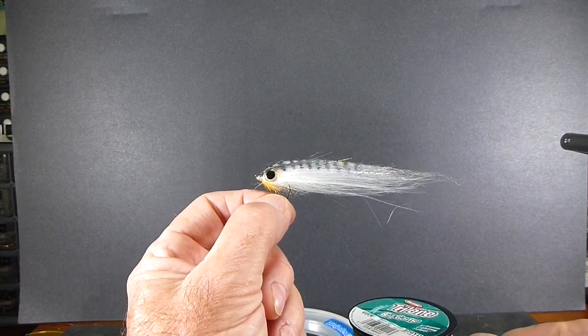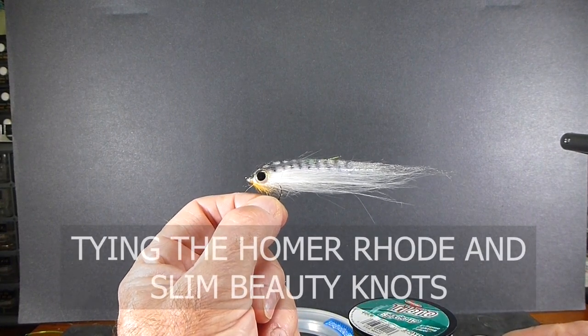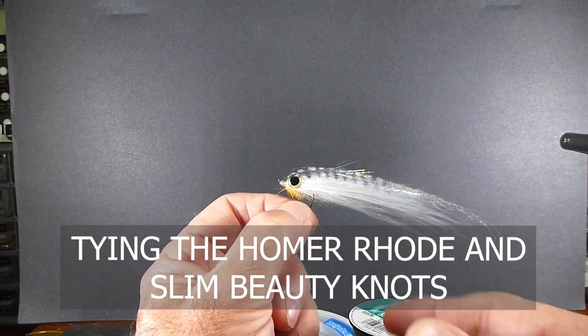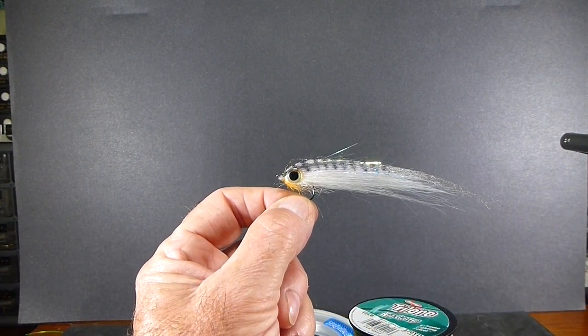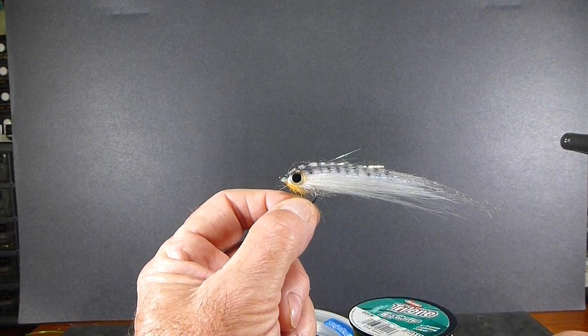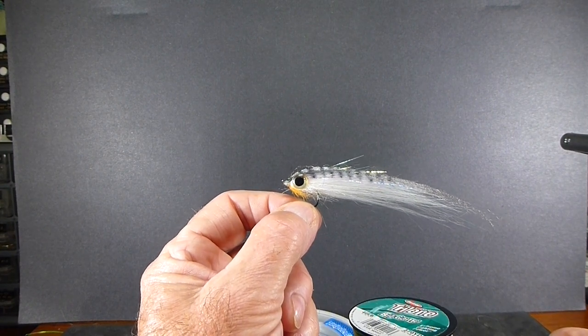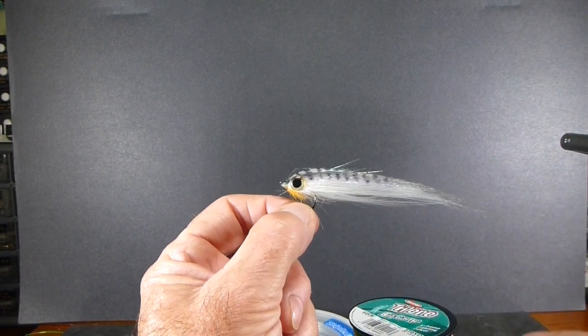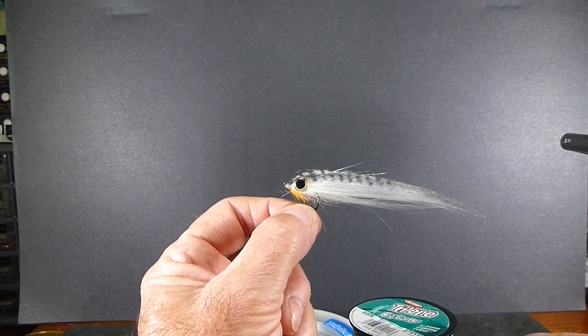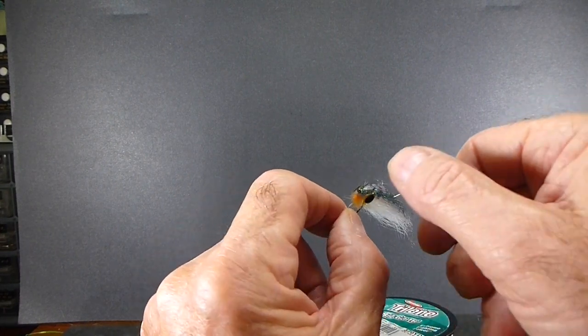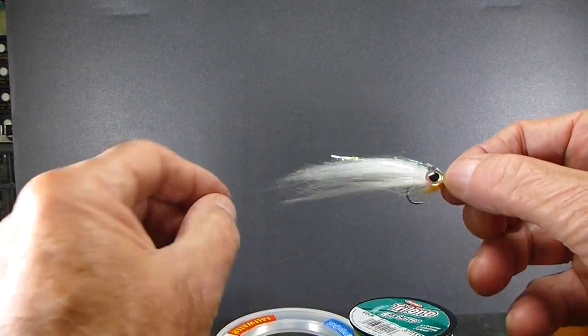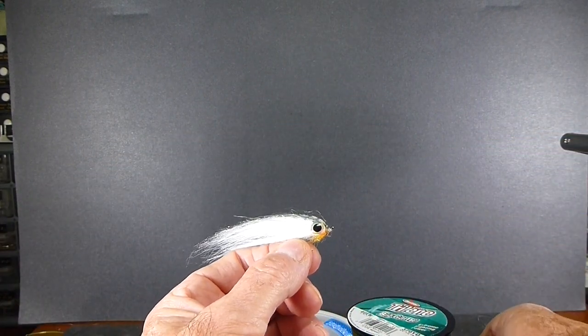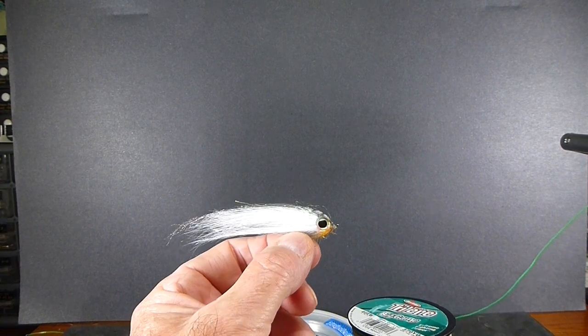Good day everyone. Today on the bench I'm going to tie you up some knots, a couple simple knots that you'll want to know for your saltwater applications. I've used it on even trout or salmon for sure, northern pike, so I'll show you a nice little loop knot for attaching your flies to a heavy bite tippet.